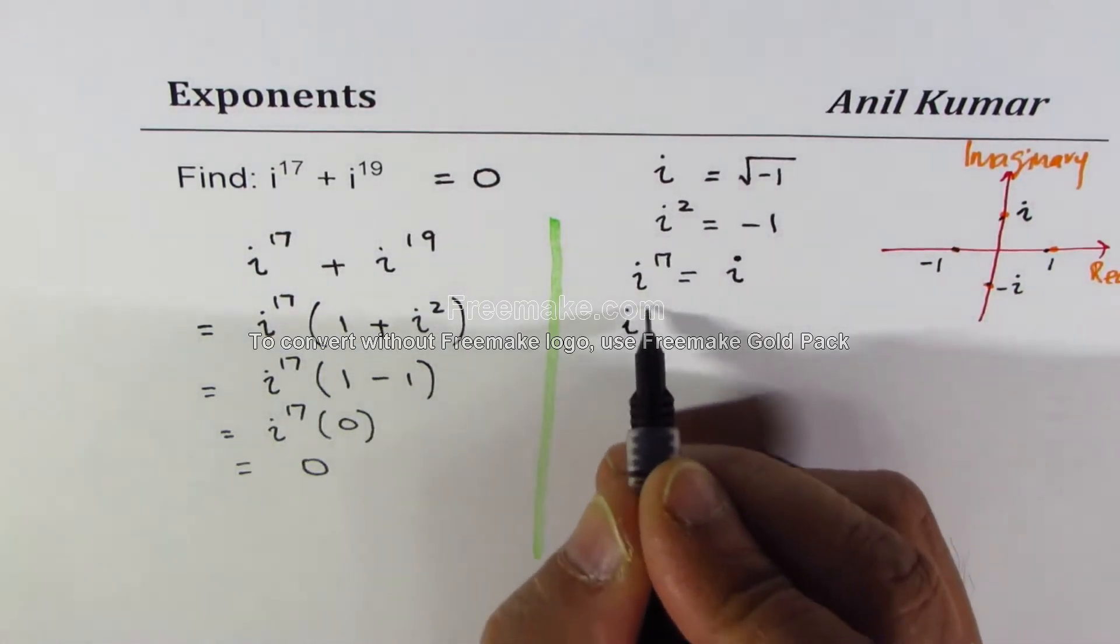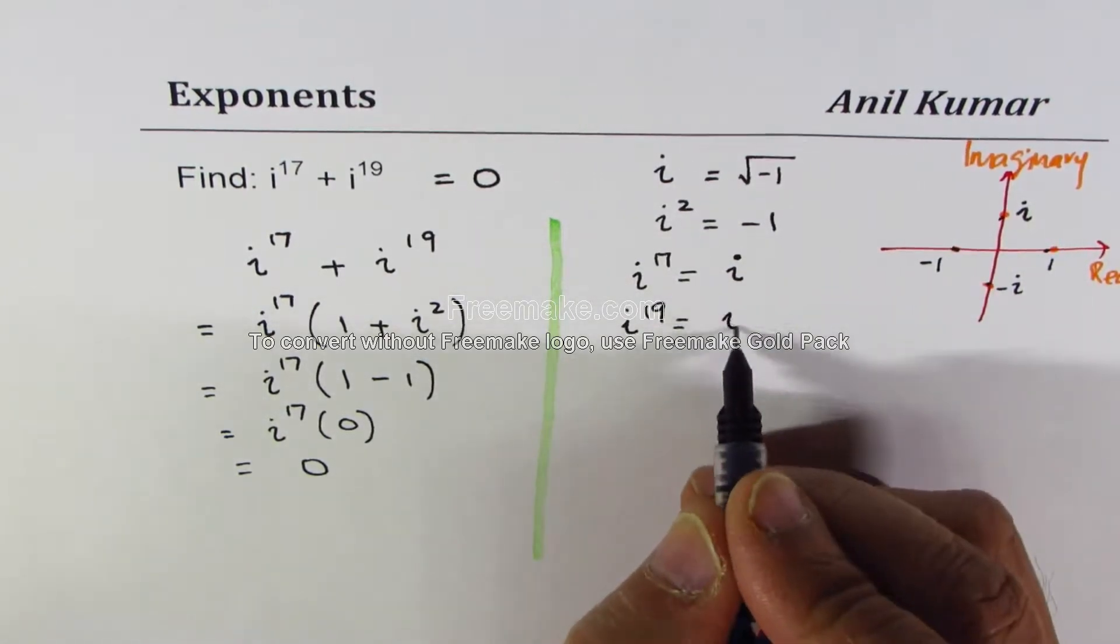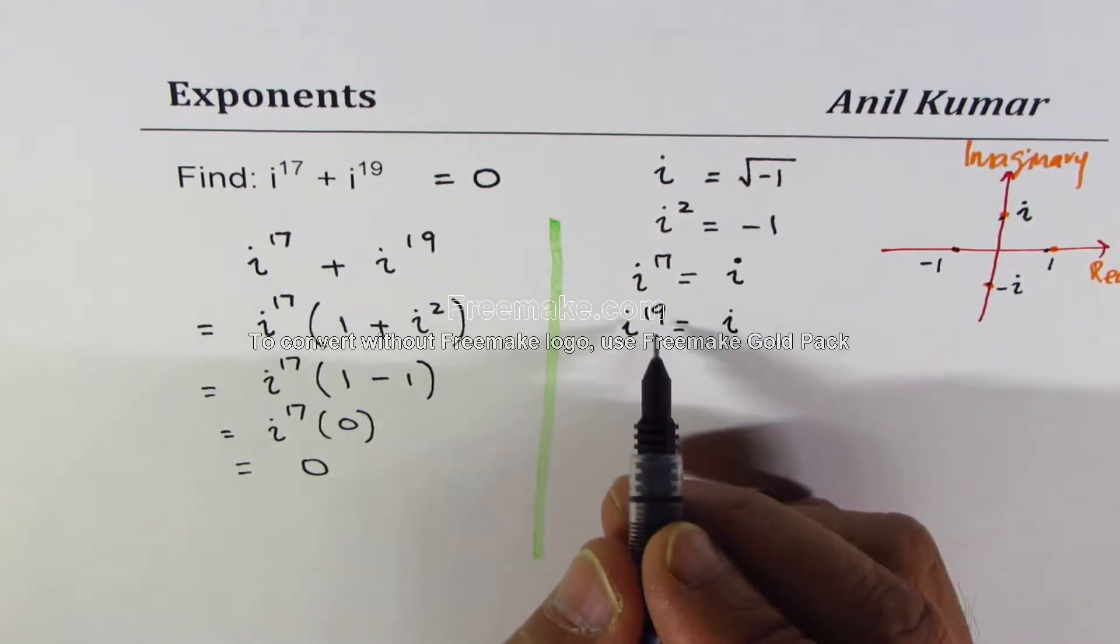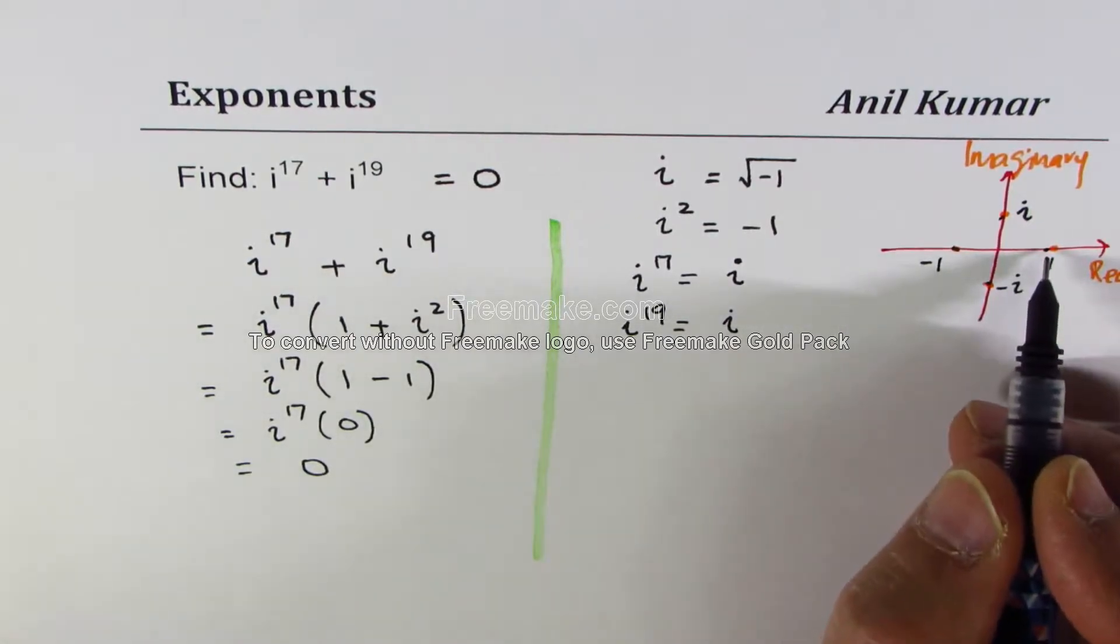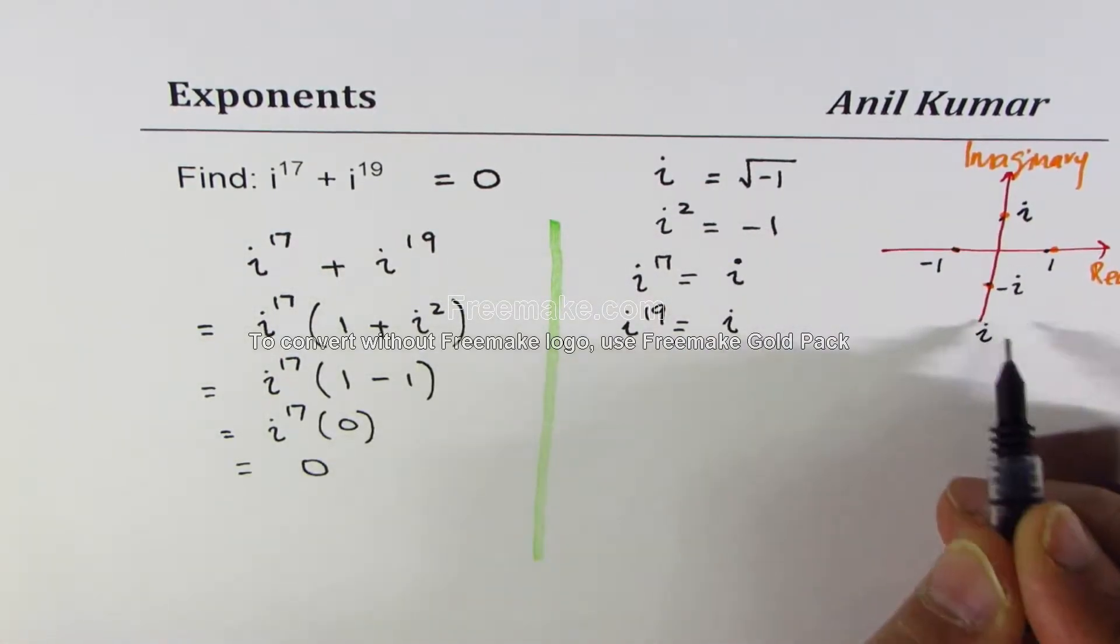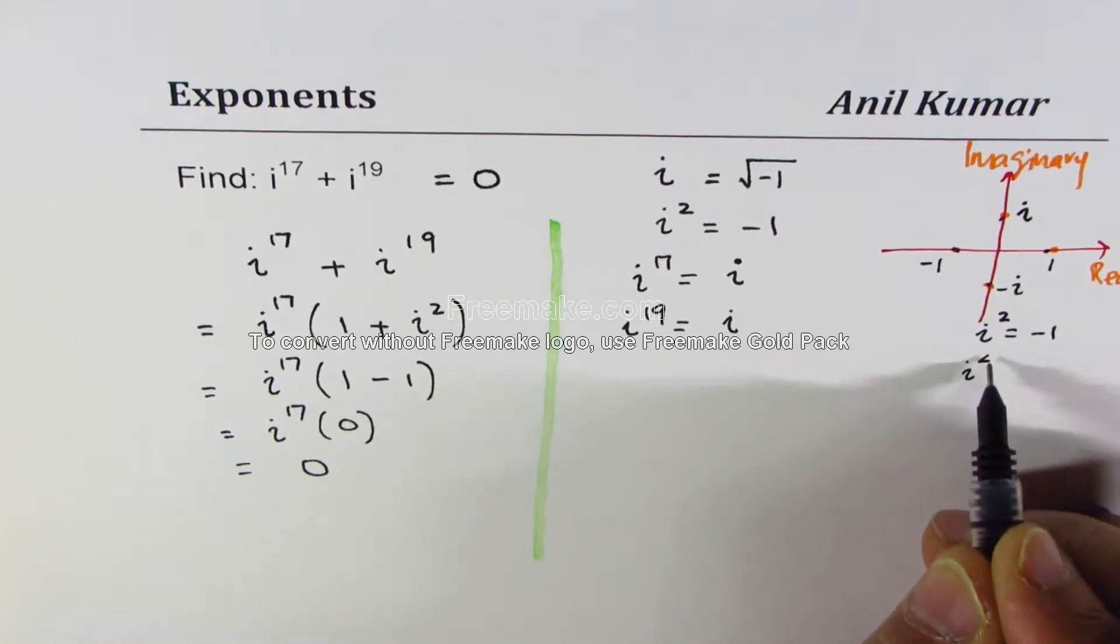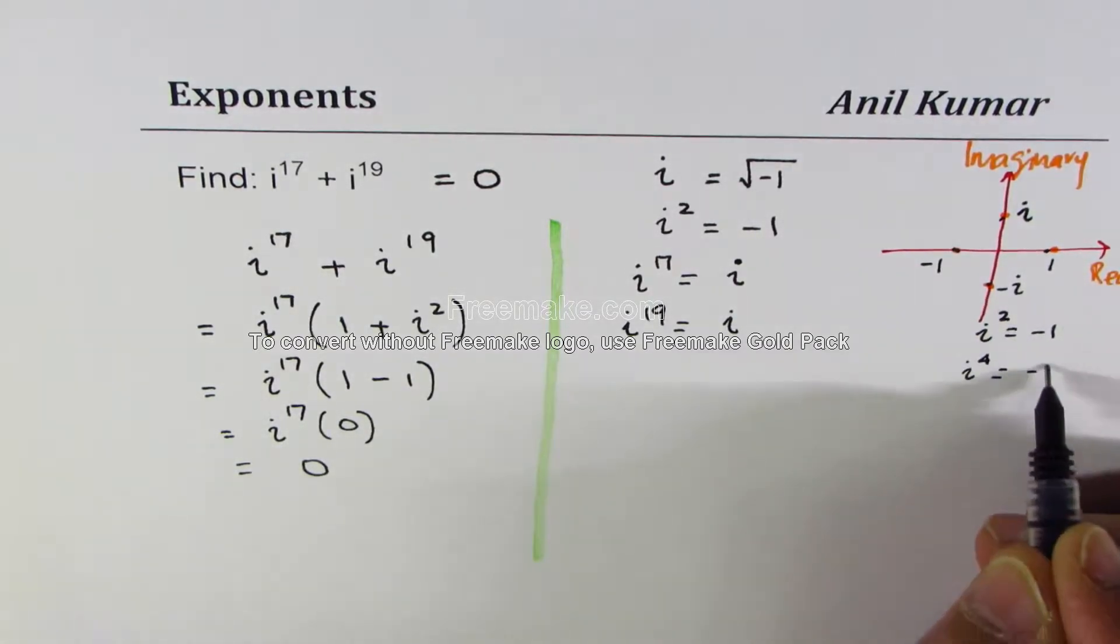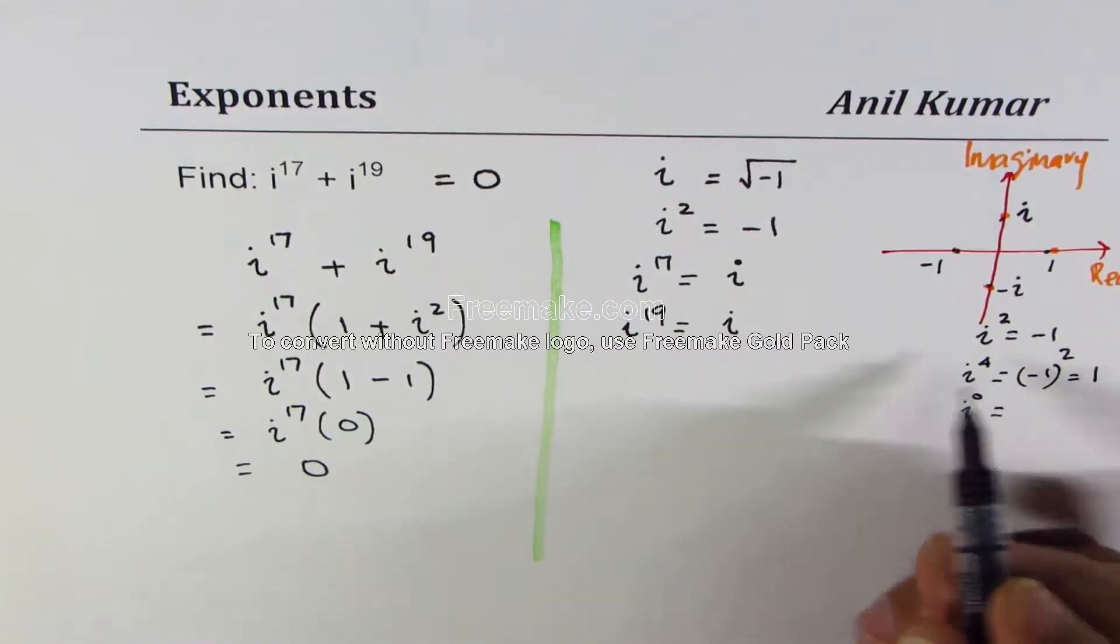Similarly i to the power of 19, a more efficient way is we could write this as power of fours because anything to the power of 4. If i square is minus 1, what is i to the power of 4? It is of course minus 1 square which is 1. It is same as i to the power of 0.